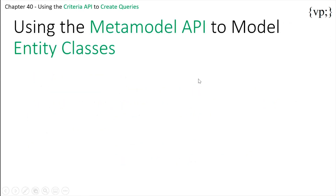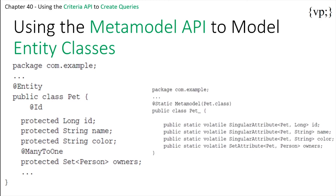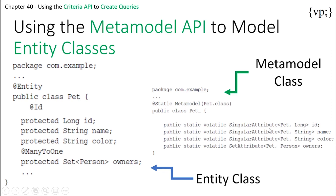Let's take a look at using the Meta Model API to model entity classes. The Meta Model API creates meta models of your entities, which is like data about your data — basically metadata. Criteria queries use the Meta Model class and its attributes to refer to the managed entity classes and their persistent state and relationships. If we take a look at these two examples, the following pet class has four attributes: ID, name, color, and owners. A Meta Model class is created for this pet class to allow the Criteria queries to refer to this class.